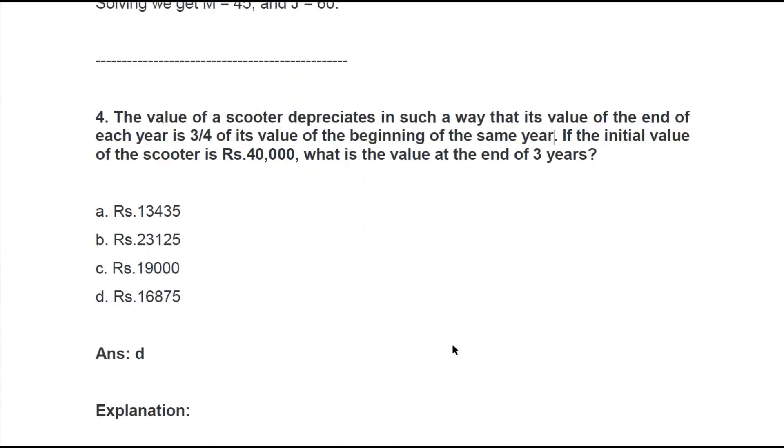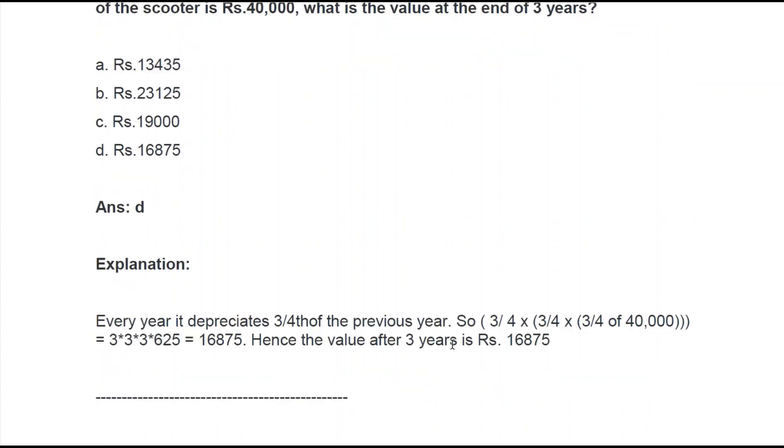Let's see how they have solved it. Well yes, they have done it in the same way. Every year it depreciates 3/4th of the previous year. So 3 by 4 into 3 by 4 into 3 by 4 of 40,000. Like we need to do this first, then coming up with this, and then coming up with this one. The whole thing. Obviously it goes by Bodmas rule. Now here we have the answer upon solving it as rupees 16875. Alright.